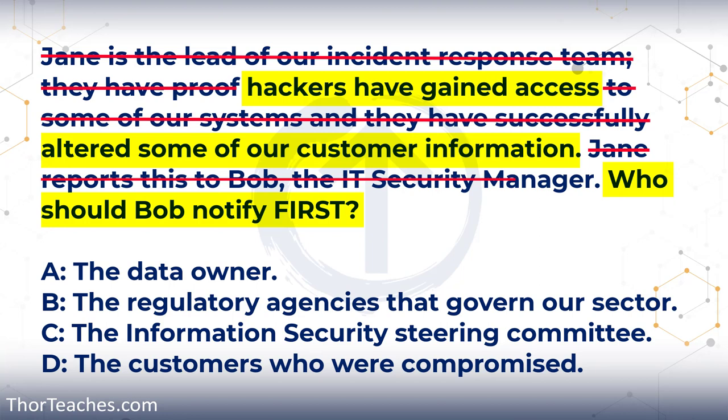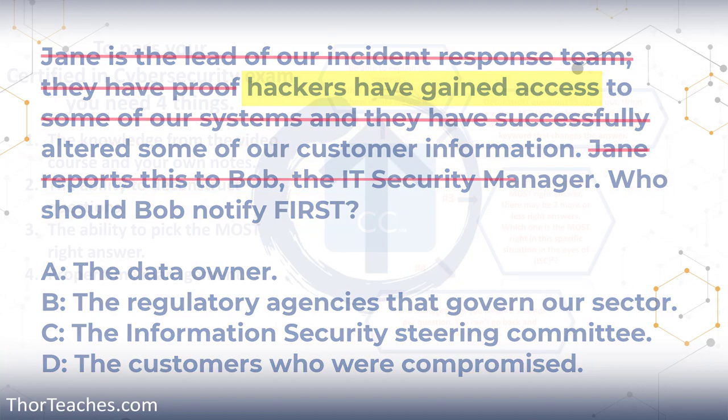Another way you could think through the question is: if we can only implement or do one thing, what would best solve the problem? In this case, if you can only notify one thing — one person, one agency, one whatever — which one should you choose? Again, we get the same answer: the data owner. But it can, in some cases, help you to argue with yourself — this is a better answer because if I can only pick one, then I would choose this.